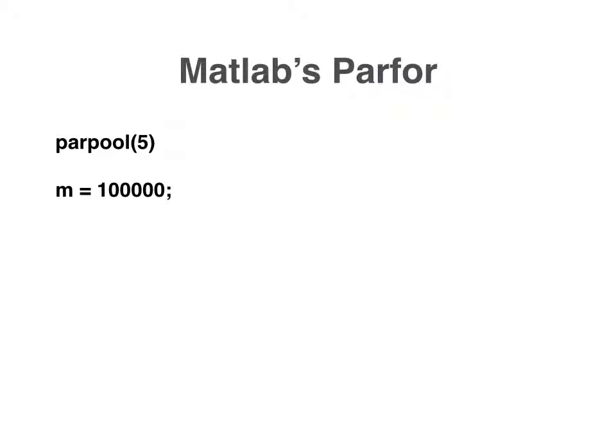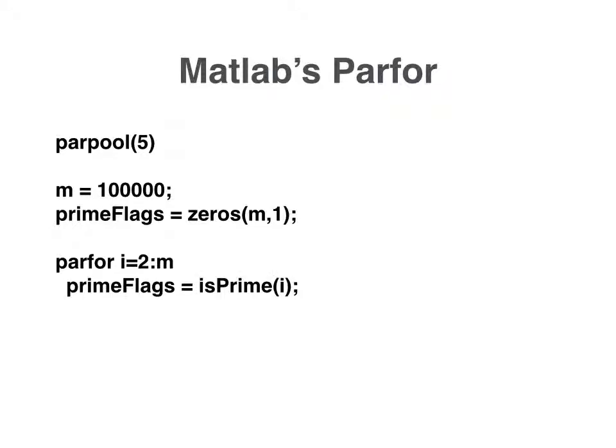In our example, we're going to determine the number of primes between 2 and 100,000. Here I've created an array of boolean flags to tell me whether or not the corresponding integer is prime. And now we're going to loop over the range 2 to m, and in each iteration of the loop we're going to call the function is_prime to determine if the corresponding integer is prime.